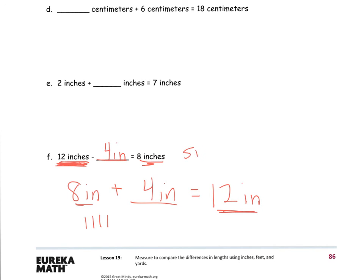Meaning 12 inches minus 4 inches will equal 8 inches. I have my subtraction sentence and my addition sentence, and they're related sentences to each other. Hope this helps. Thanks for watching and good luck on your homework.